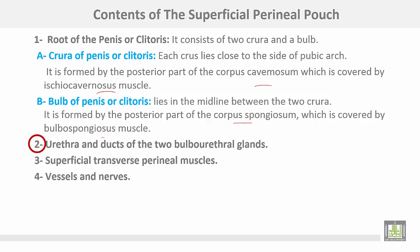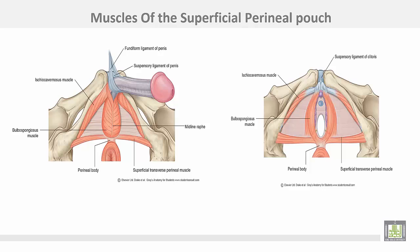Additional contents include the urethra and ducts of the two bulbourethral glands, the superficial transverse perineal muscles, and vessels and nerves. This diagram shows the muscles in the superficial perineal pouch: ischiocavernosus, bulbospongiosus, and transverse perineal muscles — as seen in the male and in the female.